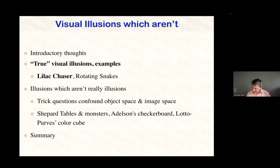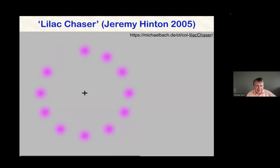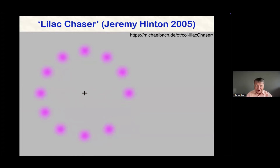I'll start with examples of true visual illusions. This is the Lilac Chaser by Jeremy Hinton - that's actually how my website started. Please follow the gap which runs around here. You see there is a gray gap. If you then look to the center, to the cross there, and let your gaze hang on the cross, you will notice a green ball running around. And if you are a good steady fixator, this green ball will obliterate all these ugly magenta blobs. If I advance now, you will suddenly see a circle of green blobs.